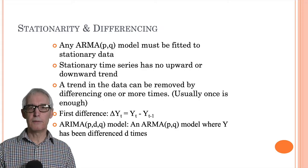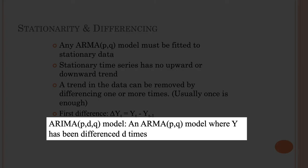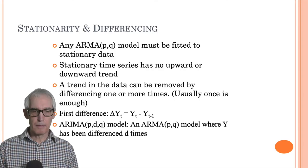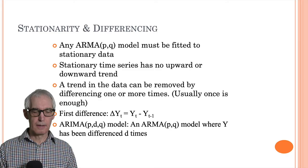The number of times you have to difference to end up with a stationary data series is known as the order of integration — that's what the I stands for, and the D in the ARIMA(p,d,q) model. AR is autoregression, MA is moving average, and I stands for order of integration — the number of times you have to difference to achieve stationarity, indicated by parameter D. When you estimate this model, those are the three parameters you put into the software, as you'll see with SPSS.